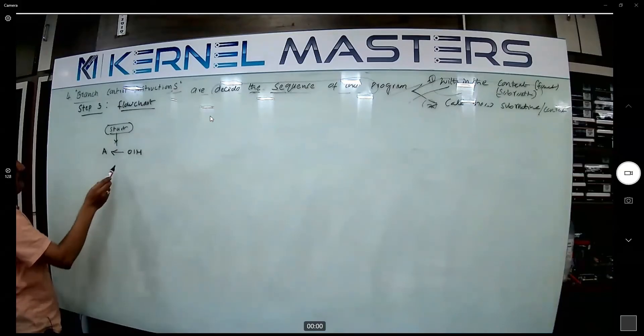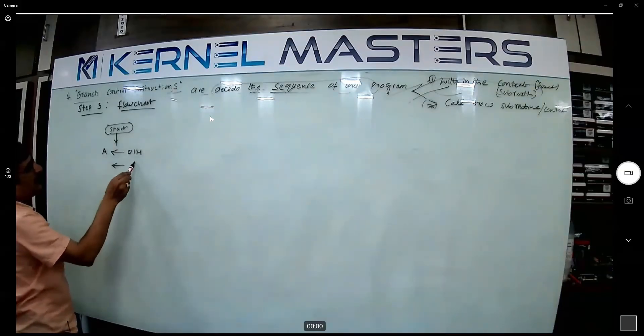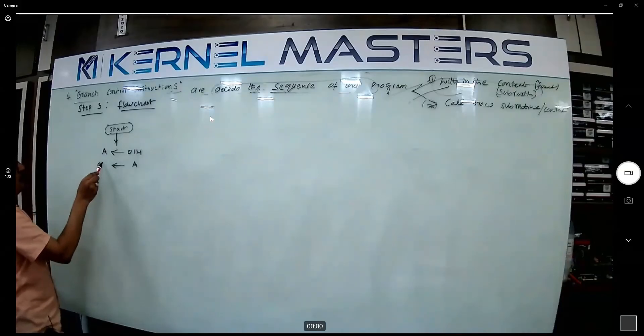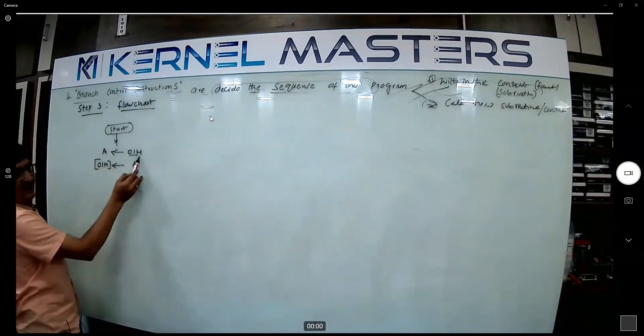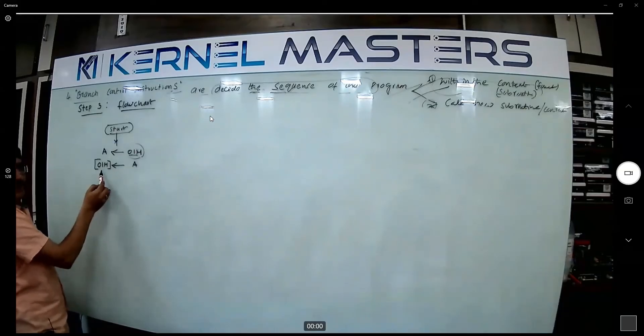Which register? A register. Then content of A is zero. Tell me 01H. Syntax is important. Understood everyone? The input device address, your data. Tell me the address. Okay, understood? No?